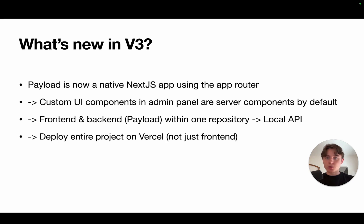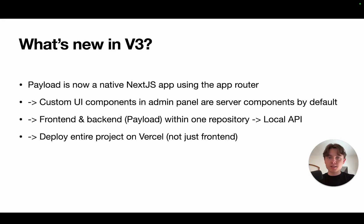In the old tutorials you basically had to go through the REST API to fetch data. You sometimes had to adjust the access control, and now you could in theory completely close the access control so nobody can access your API at all — only your server components can fetch the necessary data. Another big thing is you can now deploy your entire project — not just your frontend but frontend and backend — on Vercel, which can basically be free. The Vercel free plan is pretty good, so this might be a game changer for smaller projects that want simple, cheap infrastructure.